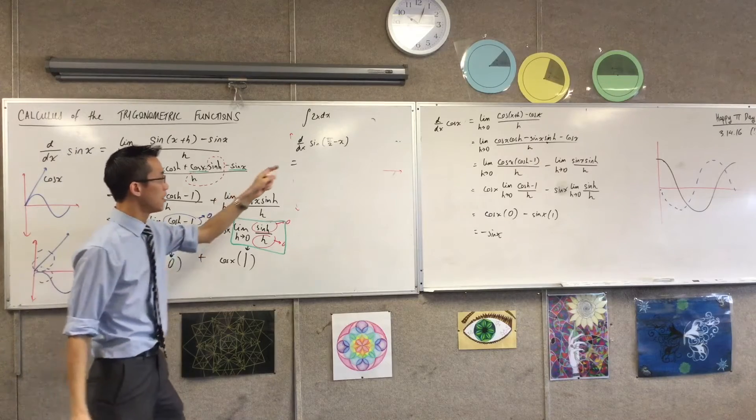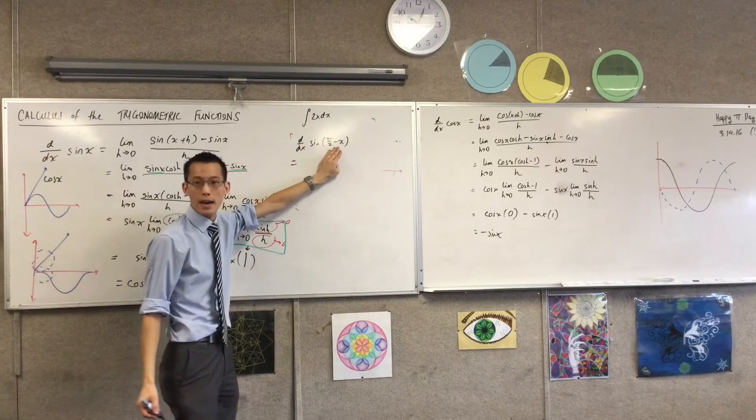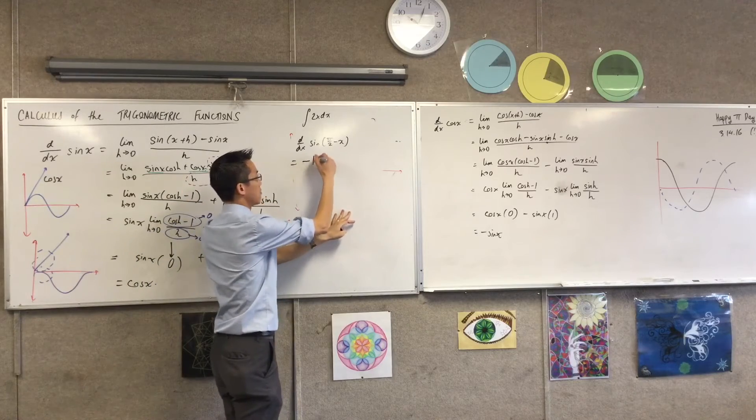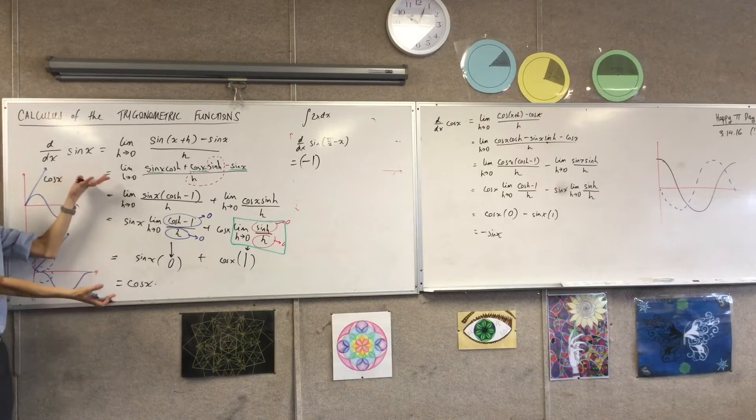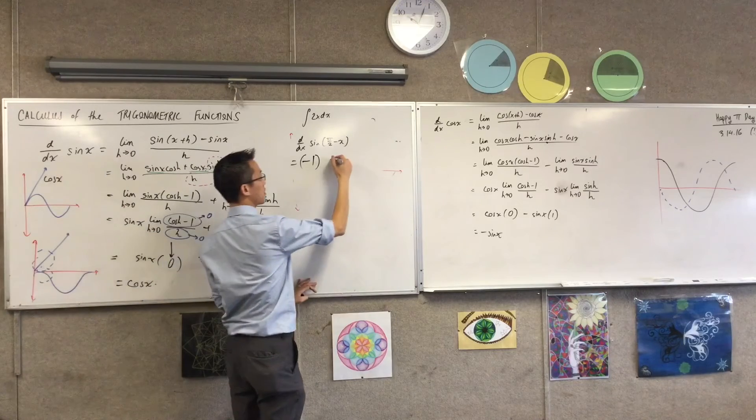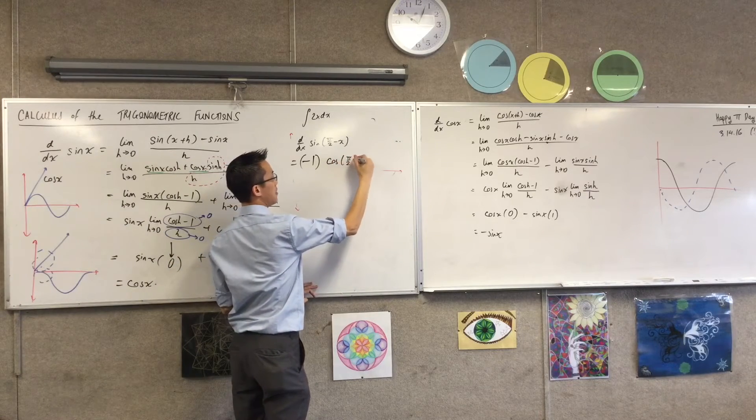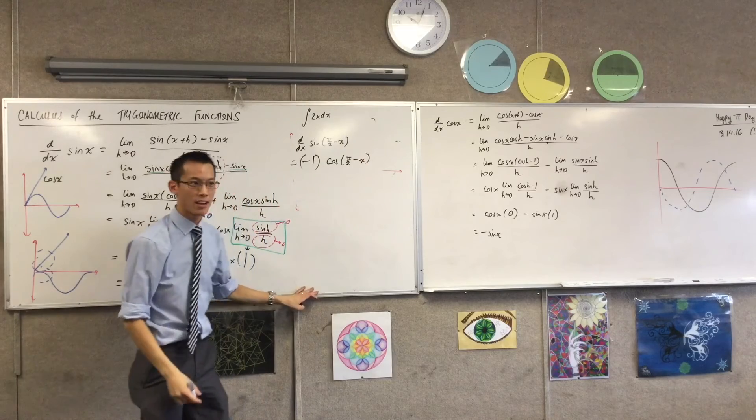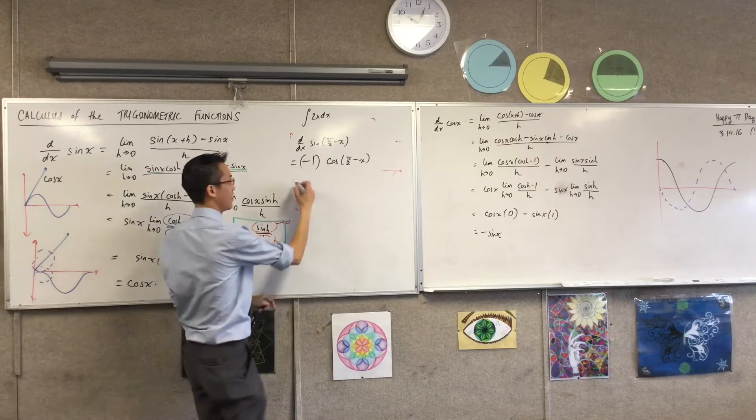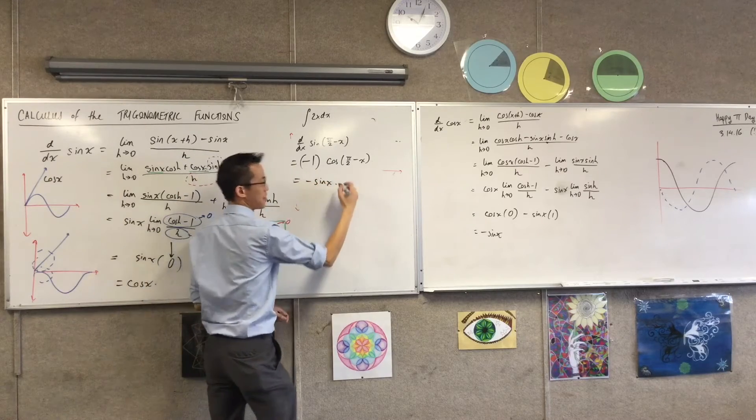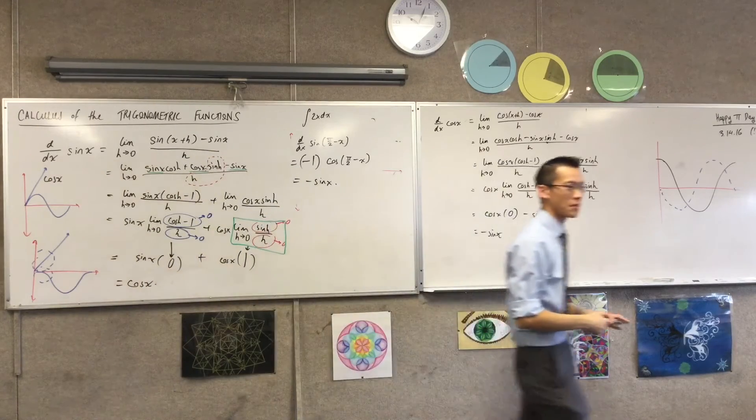So when you do the inside function, what's the derivative of the inside? It's just negative one. And then you do the outside but we just decided that sine turns into cosine. Right? So it just becomes this. There's that inside function still there. But wait a second. We just showed. I know what that is. That's sine. And you are there in some pretty decent time.